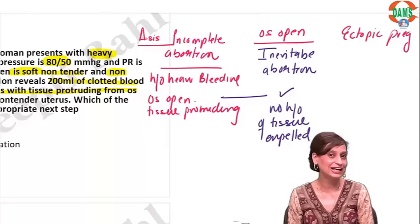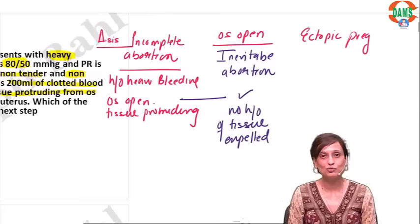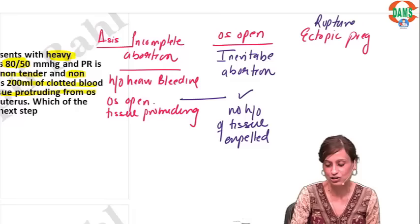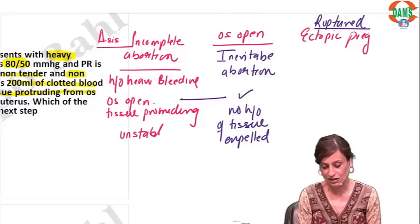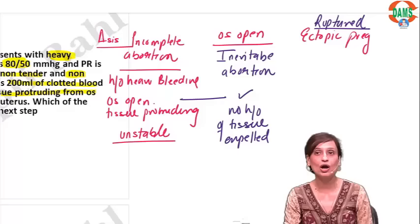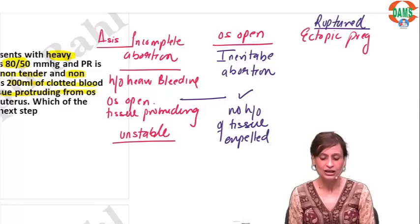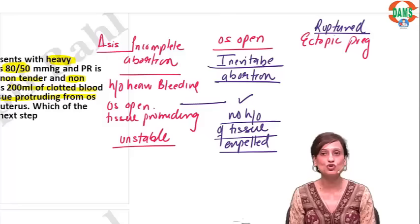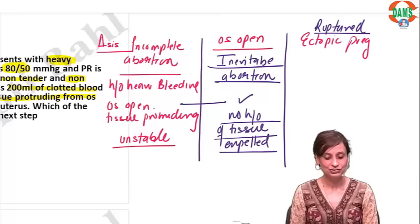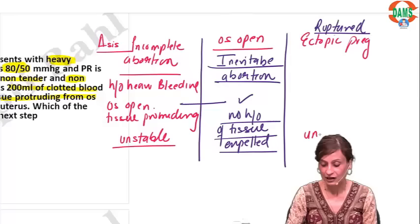Now for ectopic — which type of ectopic is the DD here? We want to keep ruptured ectopic as a DD because the patient has come with unstable vitals. So a close DD is ruptured ectopic. Even in ruptured ectopic the patient can have unstable vitals.